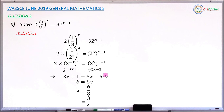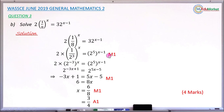Let me share the mark distribution for this question from the official marking scheme. The first method mark is awarded when you correctly express 8 and 32 in index form. The second method mark is for equating the powers after arriving at two index numbers with the same base. The third method mark is for solving the equation by dividing both sides by the coefficient of x. Finally, when you get x exactly as 3 over 4, you earn the accuracy mark. In total, question 3b carries 4 marks.